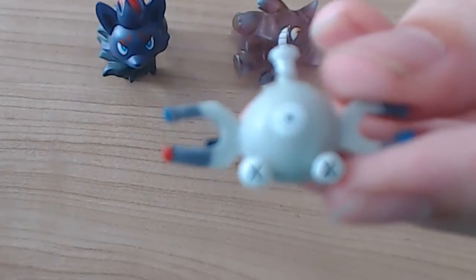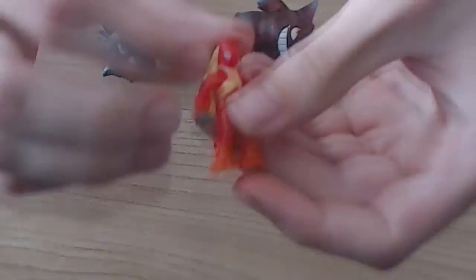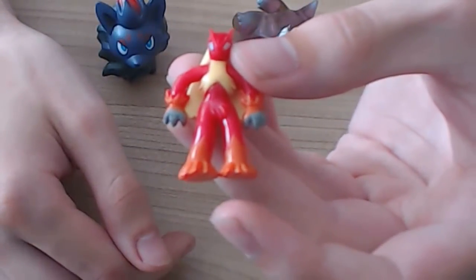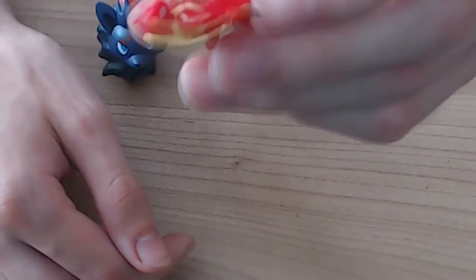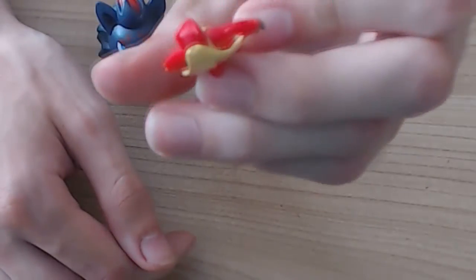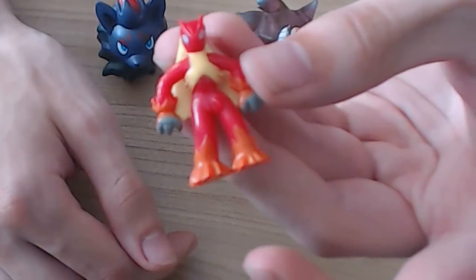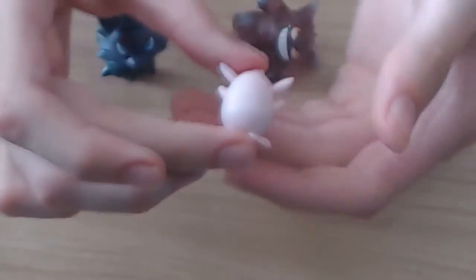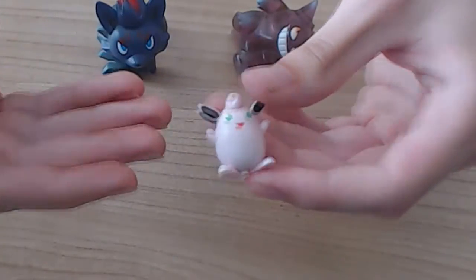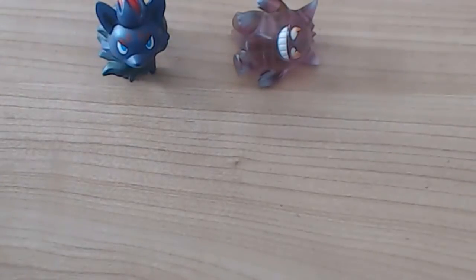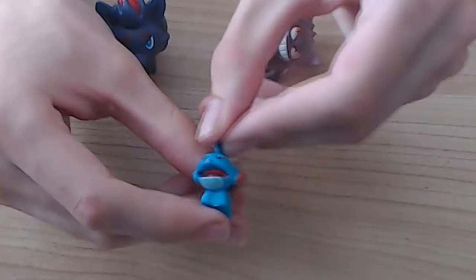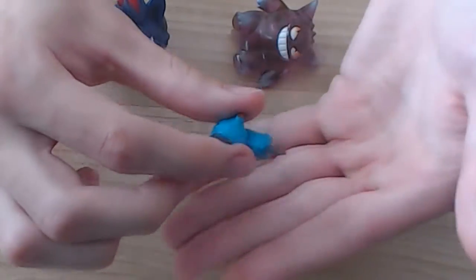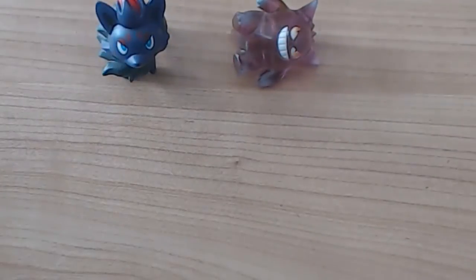Magnemite. Then you have Blaziken. He looks a little bit more like a villain of the Power Rangers. His eyes are just white dots with no real pupils, but other than that he's pretty nice. Then you have Wigglytuff. This one is pretty nice. What can you do wrong with Wigglytuff? He's an easy one to make. Then Mudkip. Look how tiny it is.